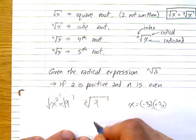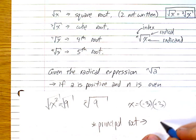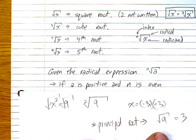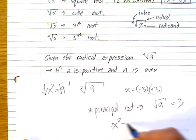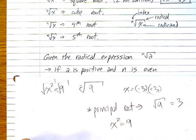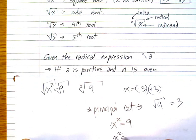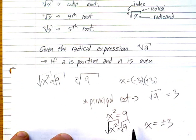Now, this leads to something called the principal root. If I simply ask for the square root of 9, the answer is just 3 — that is the principal root. However, when solving an equation like x² = 9 algebraically, you apply the square root to both sides and get x = ±3. So there's a distinction between finding the square root of a number and solving an equation using radicals.